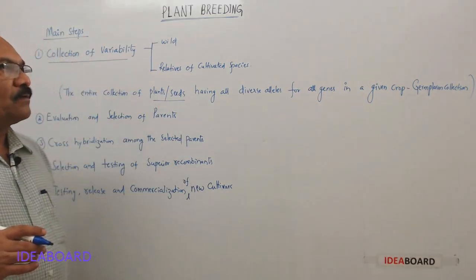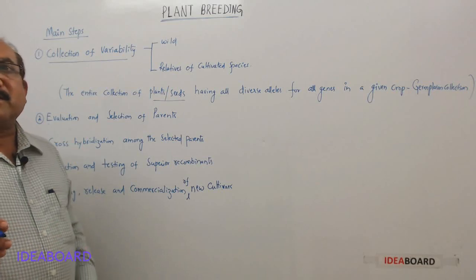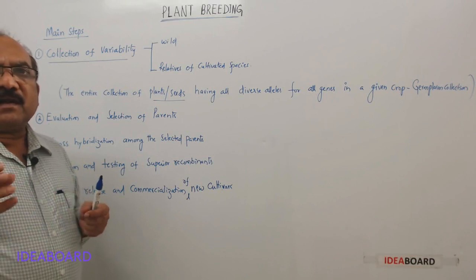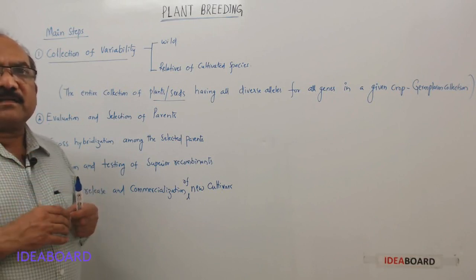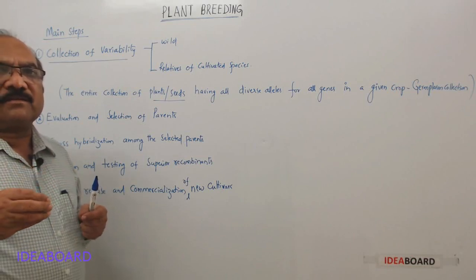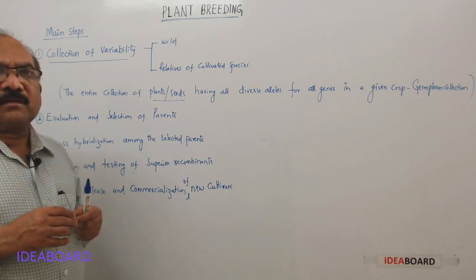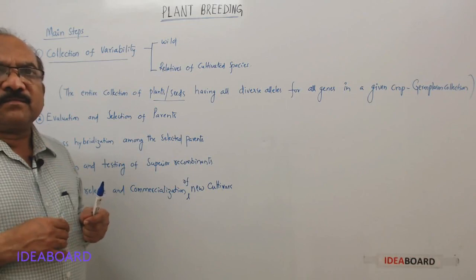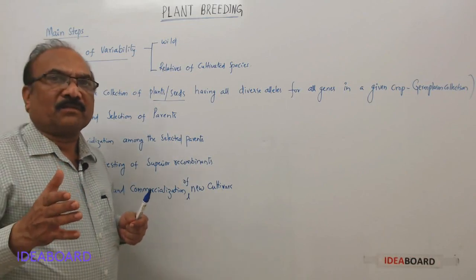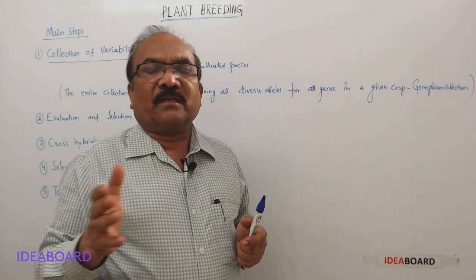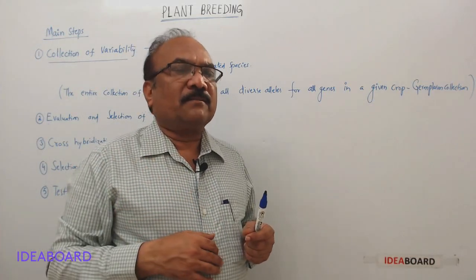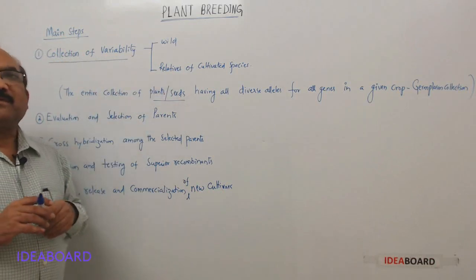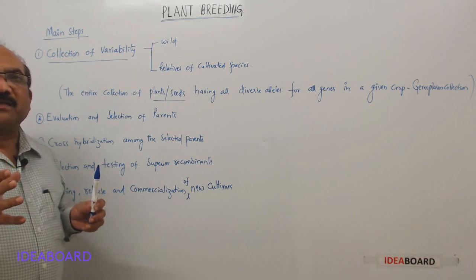The entire collection of plants or seeds having all desired alleles for all genes in a given crop is called the germplasm collection. Plant breeding is done at government institutes such as IARI (Indian Agricultural Research Institute, New Delhi), ICAR (Indian Council of Agricultural Research, New Delhi), and ICRISAT (International Crop Research Institute for Semi-Arid Tropics, Hyderabad). These institutes maintain the germplasm collection, which is called germplasm banking.